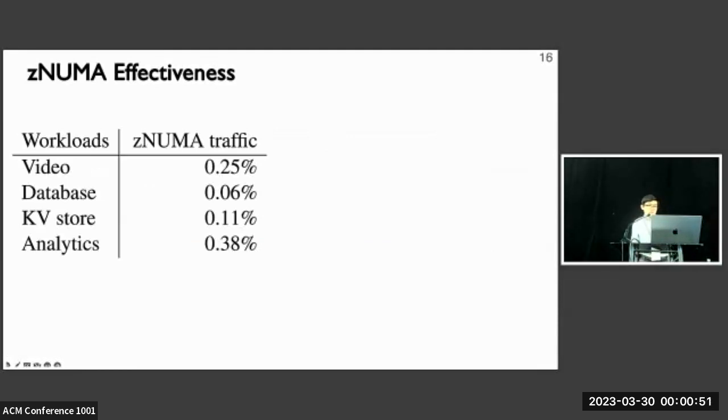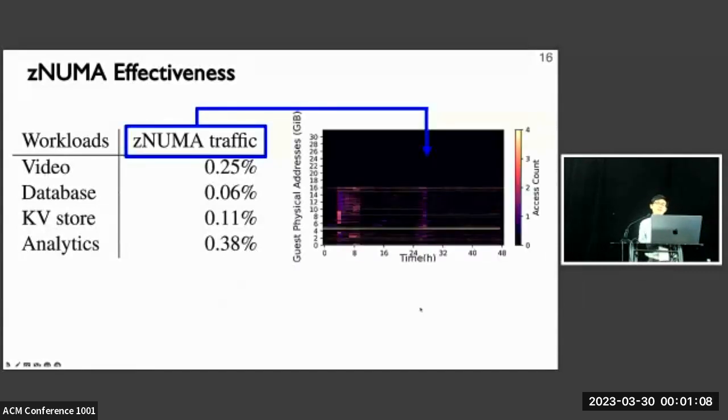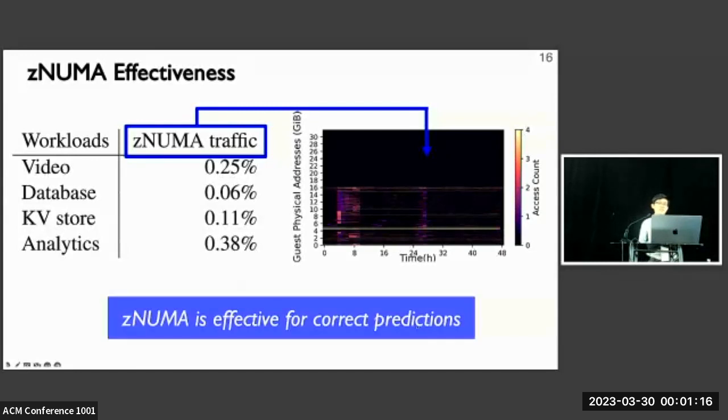Here we try to evaluate the effectiveness of zNUMA. We run a few workloads and try to monitor the amount of traffic going to our zNUMA node. As you can see here, the amount of traffic is very low as expected. It's also matching the access pattern scanning results where we've seen almost no memory access on the top half of the address space. This shows that zNUMA is effective under correct predictions.